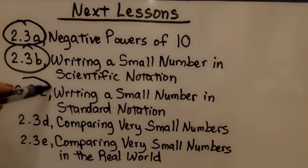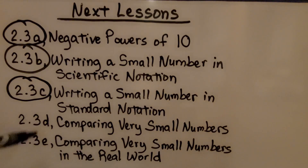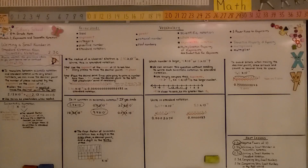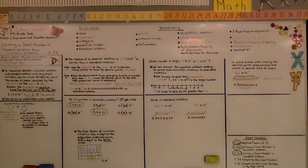We're finished with lesson 2.3c. We're going to move on to part D. In this lesson we did a little comparing of small numbers, and in 2.3d we're going to be comparing very small numbers in more depth. Just remember: the first factor of scientific notation has a digit in the ones place — it can't be zero, it's got to be 1 or more — then a decimal point, and a digit in the tenths place. I hope you have a great day, and join me for part D. Bye!